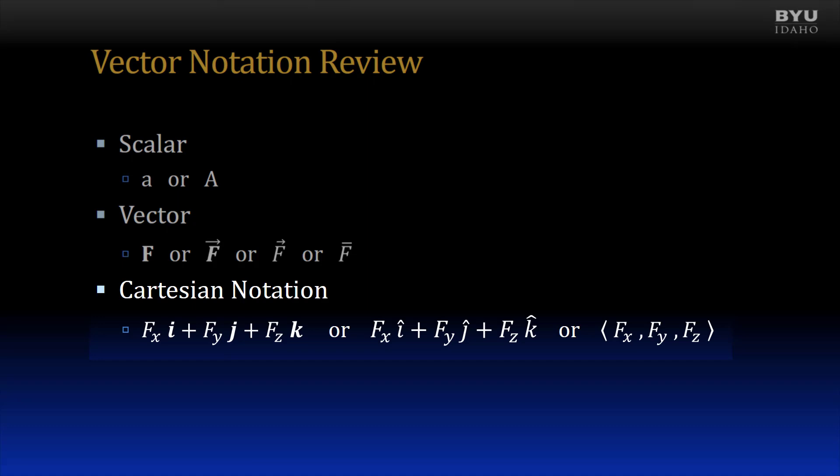Vectors in Cartesian notation follow a similar pattern. Textbooks often use bold i, j, and k. In written form, it is easier to put a circumflex, or caret, above the i, j, and k. A shorthand notation is also shown, which is convenient to use when actually doing vector operations.